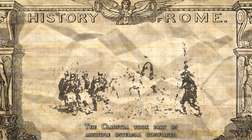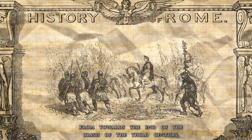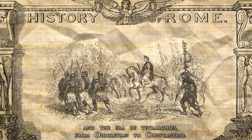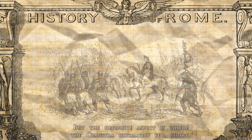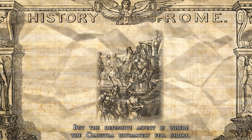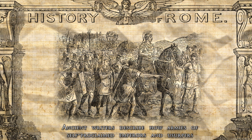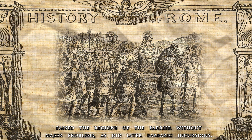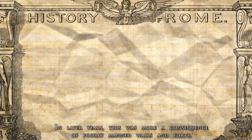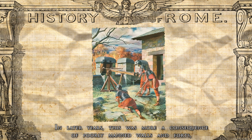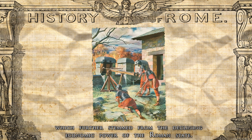The Claustra took part in multiple internal conflicts from towards the end of the crisis of the 3rd century and the era of the Tetrarchy, from Diocletian to Constantine. But the defensive aspect is where the Claustra ultimately fell short. Ancient writers describe how armies of self-proclaimed emperors and usurpers passed the region of the barrier without major problems, as did later barbarian incursions. In later years, this was more a consequence of poorly manned walls and forts, which further stemmed from the declining economic power of the Roman state.